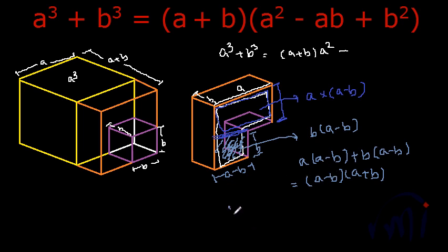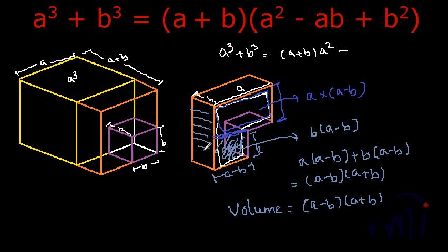The volume will be the area of the face, which is A minus B multiplied by A plus B, multiplied by the thickness of the solid, which is B. This is the volume which was supposed to be removed from the cuboid of dimension A by A by A plus B. We have to remove this much volume to get A cube plus B cube.